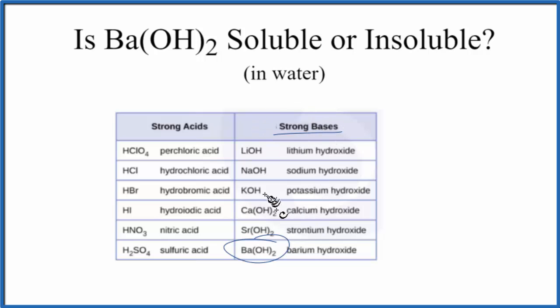What it means to be a strong base is the part of this that dissolves, the portion of the barium hydroxide that dissolves in water, is going to dissociate completely. It's going to split apart into Ba²⁺ ions and hydroxide ions, OH⁻. So we consider it a strong base.